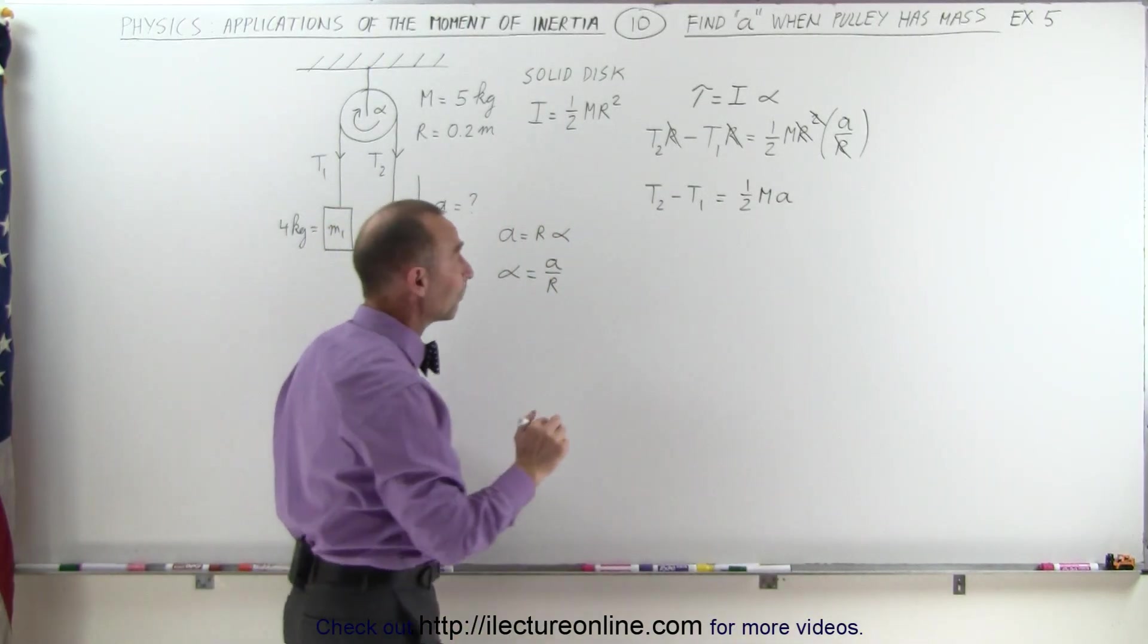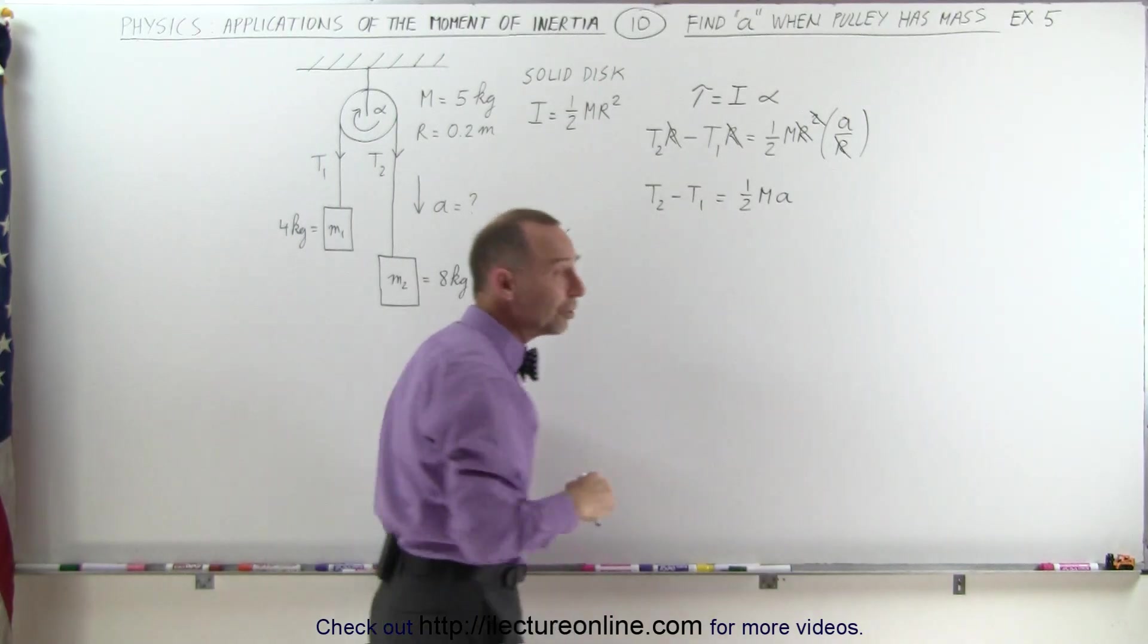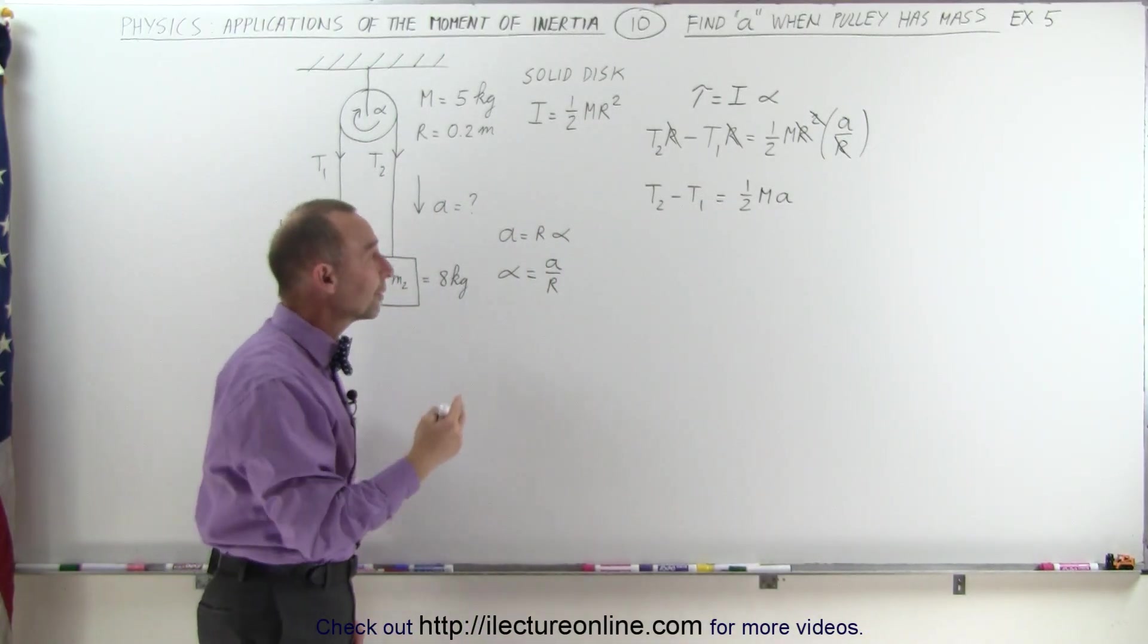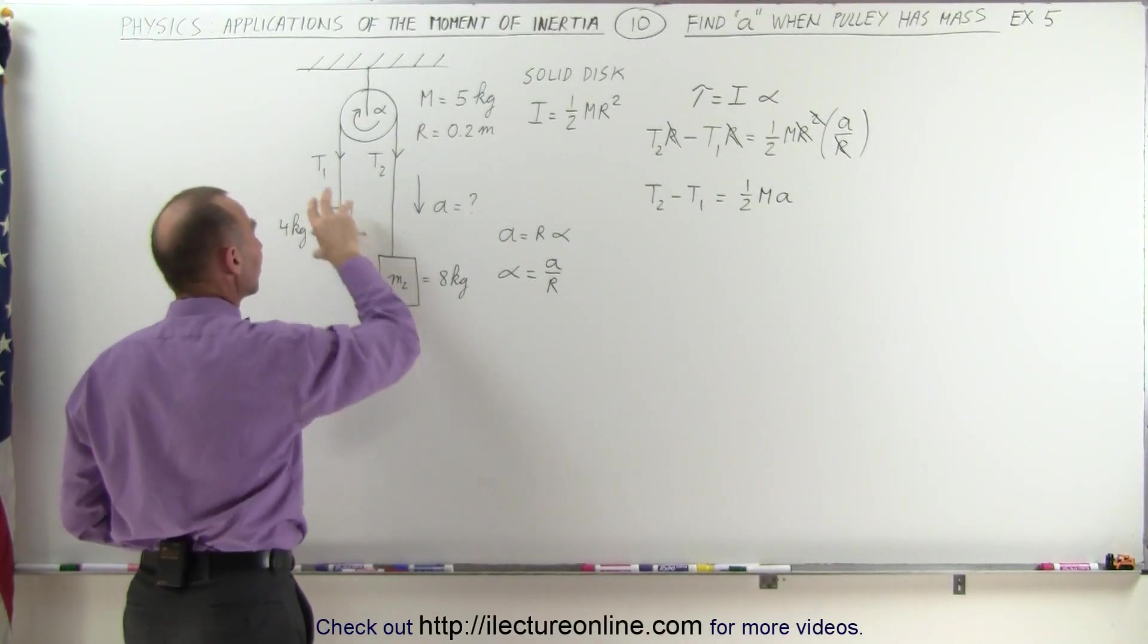In this equation, we have three unknowns. We have acceleration, T1, and T2, which means we need two additional equations to figure out what to do here. The two equations come from considering the two masses separately.